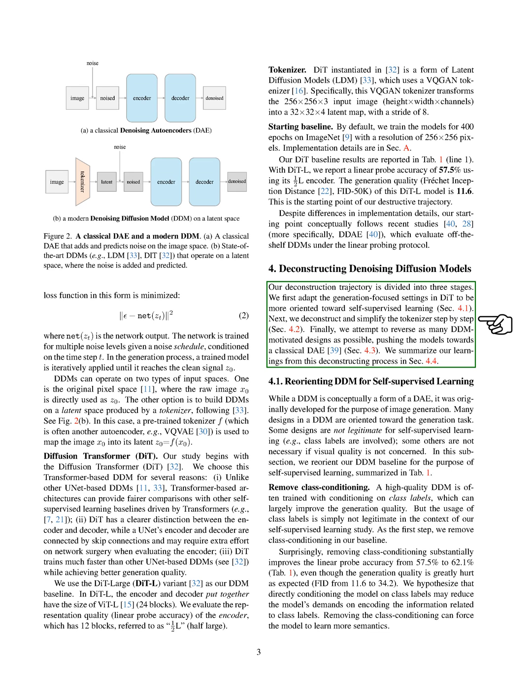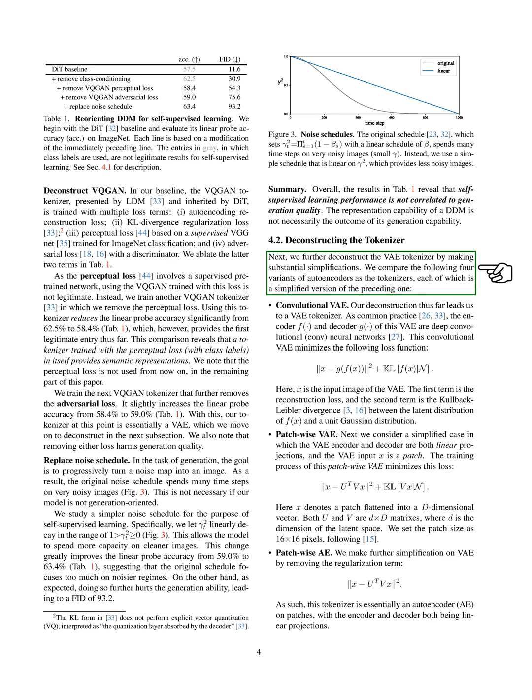Our deconstruction process is divided into three stages. First, we adjust the settings in the model to be more focused on self-supervised learning. Next, we deconstruct and simplify the tokenizer step-by-step. Finally, we try to reverse as many DDM-inspired designs as possible, pushing the models towards a classical denoising autoencoder. While a DDM is a form of a denoising autoencoder, it was originally developed for image generation. Many designs in a DDM are oriented towards this task. Some designs are not suitable for self-supervised learning, while others are not necessary if visual quality is not a concern. In this section, we adjust our DDM baseline for the purpose of self-supervised learning. Our results reveal that self-supervised learning performance is not correlated to generation quality. The representation capability of a DDM is not necessarily the outcome of its generation capability. Next, we further deconstruct the tokenizer by making substantial simplifications.